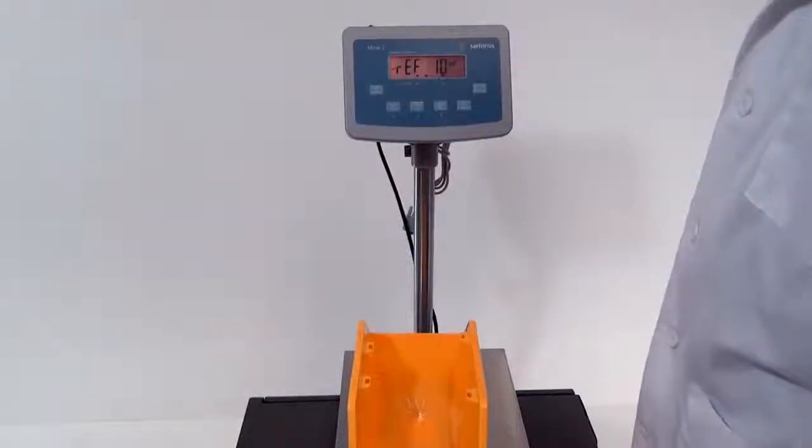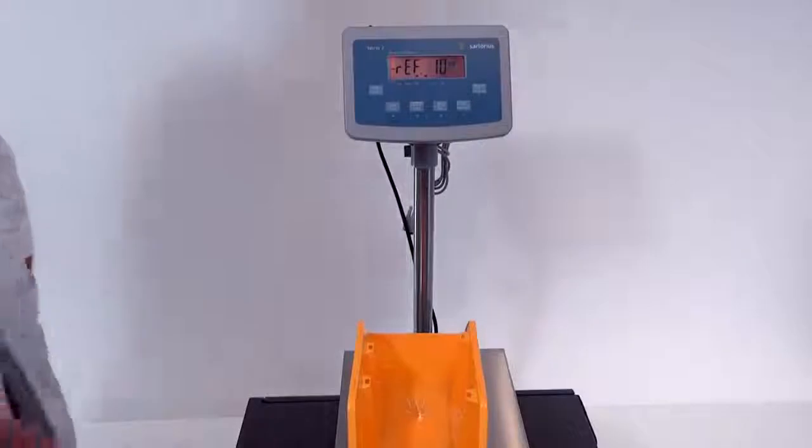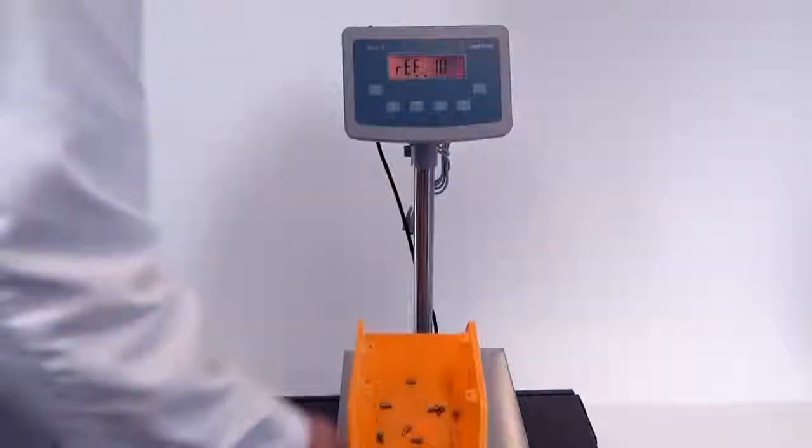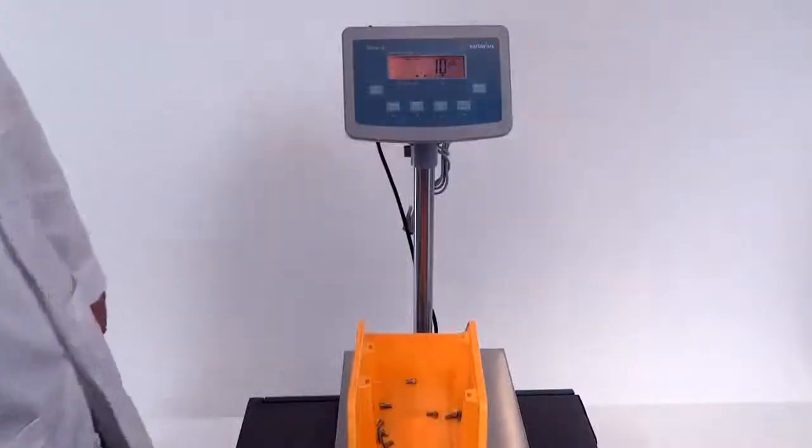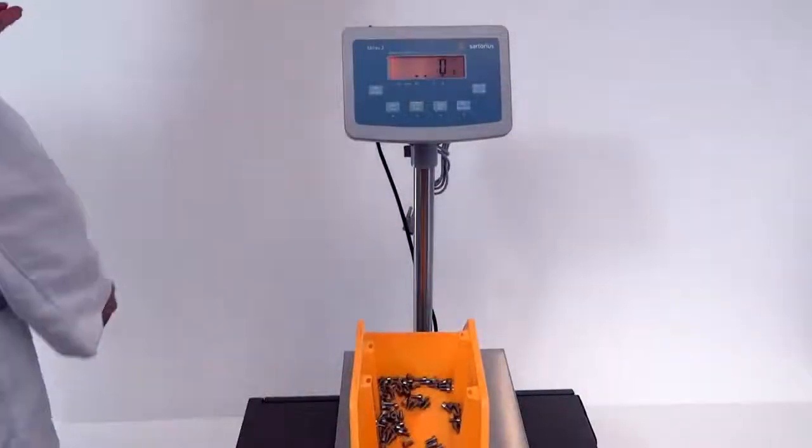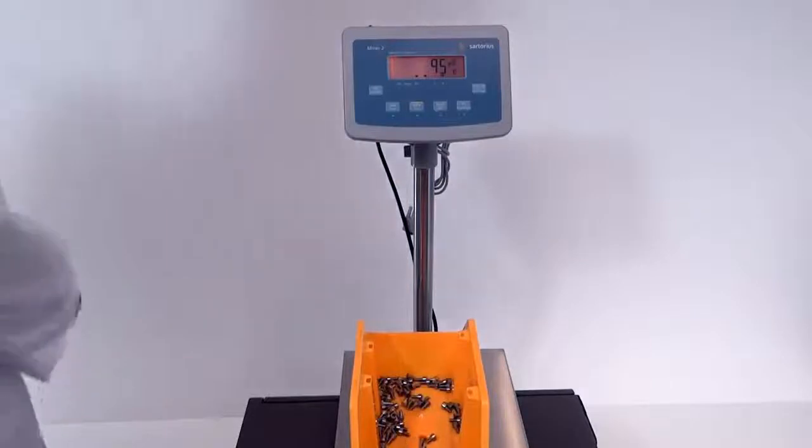For parts counting, select a reference sample from the menu, place the exact number of parts to be counted onto the scale, and press enter. Then place the remainder of the parts on the scale. The total number of pieces will be shown on the display.